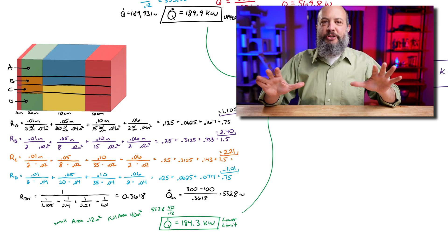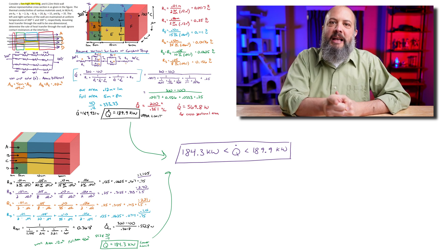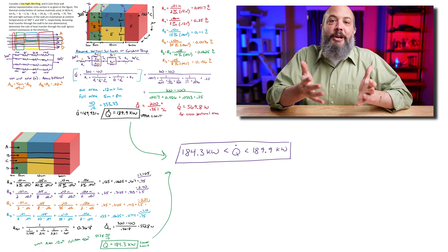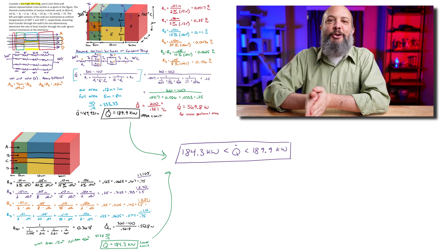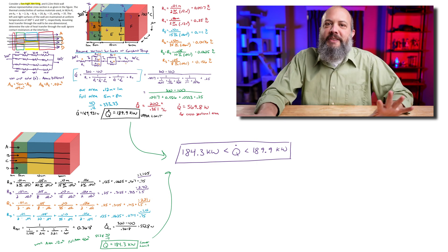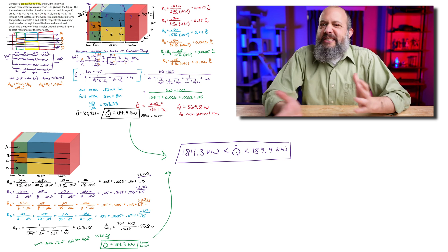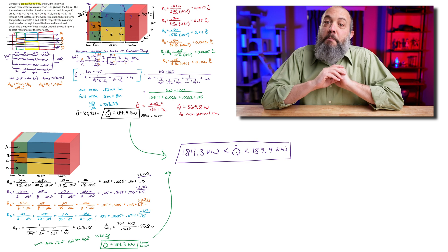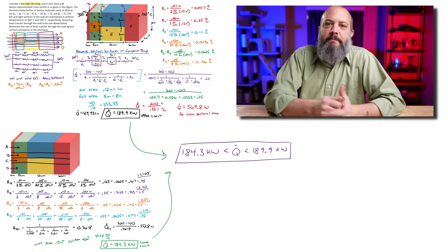Zooming out to compare the two solutions: the actual heat transfer rate will be greater than the 184 kilowatts from the adiabatic horizontal surfaces assumption, and less than the 189.9 kilowatts from the constant vertical temperature assumption. So the two methods give us a range, and the two answers are very close together, meaning our range is quite narrow — a good outcome. Depending on your problem statement, you might only need one method, so read carefully or check with your professor. For the most accurate answer, solve it both ways. If you want more practice with thermal resistances using cylinders instead of plane walls, check the linked video.